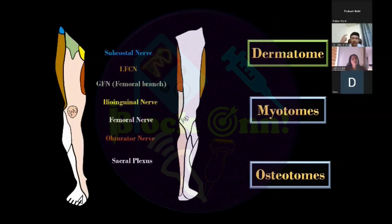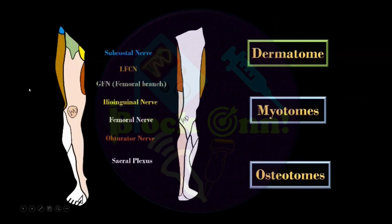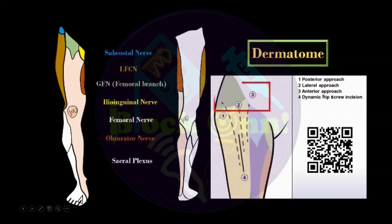When selecting a lumbar plexus block for any particular surgery, you need to consider dermatome, myotome, and osteotome. The upper part of the lower limb and the lower abdominal area is supplied by the subcostal nerve, iliohypogastric, ilioinguinal, and posteriorly the superior cluneal nerve. The upper part of the incision falls in that area and may not get blocked with the lumbar plexus. So even if you perform an excellent lumbar plexus block with adequate drug spread, the patient may complain of pain at the incision. To address this, ask your surgeon to give local infiltration, or perform a separate T12 paravertebral block, anterior or lateral QL block, transversalis fascia plane block, or ultrasound-guided superior cluneal nerve block.